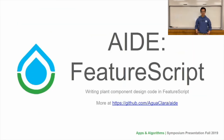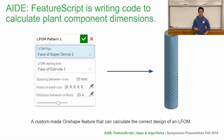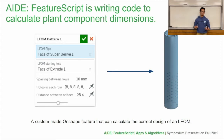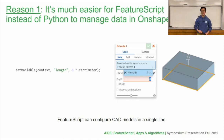Now on to more specifically AID FeatureScript. The purpose of AID FeatureScript is to write these custom Onshape feature types in order to calculate what is the best plant design for a given community. These features can be inserted into our existing CAD models built by the Onshape team. FeatureScript is a relatively new programming language that's a part of the Onshape platform, and it's really powerful when we use it in combination with these Onshape 3D models. It's much easier for FeatureScript than Python to manage data within Onshape — with just a single line of FeatureScript code in the set variable function, we can safely configure the entire CAD model that you can see on the right.